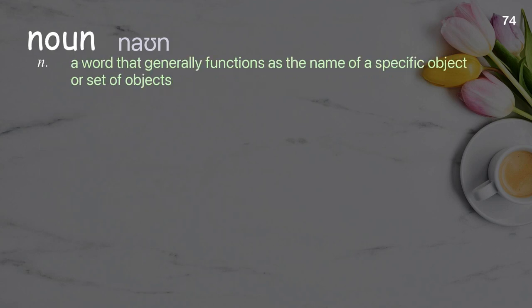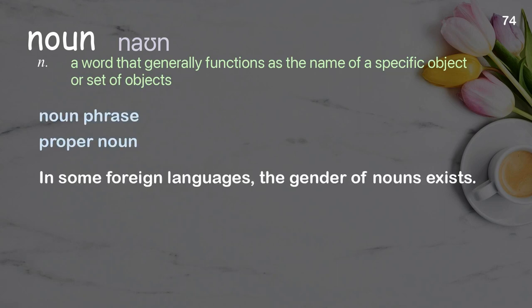Noun: a word that generally functions as the name of a specific object or set of objects. Examples: noun phrase; proper noun. In some foreign languages, the gender of nouns exists.